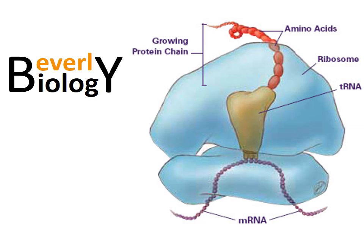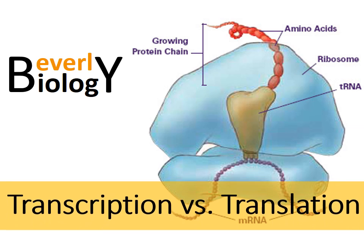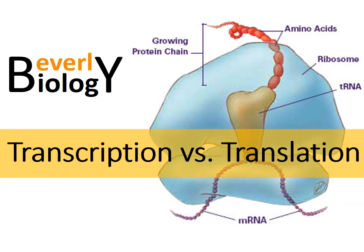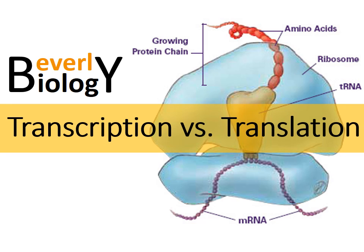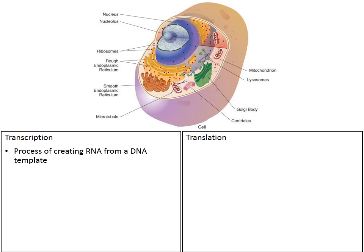Today's video we're going to go over the two processes called transcription and translation. Let's start off with the process of transcription. This is the process where our cells will create RNA using a DNA template — a template is like a mold.